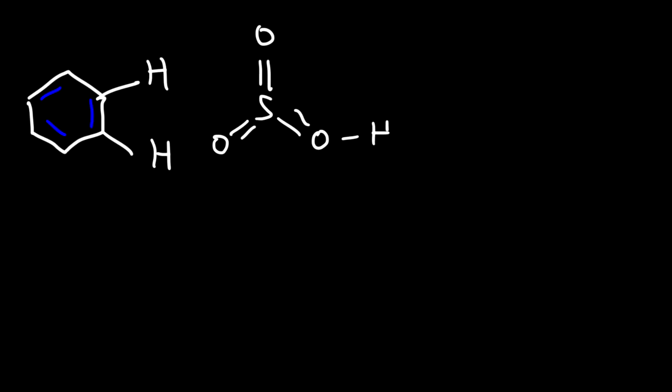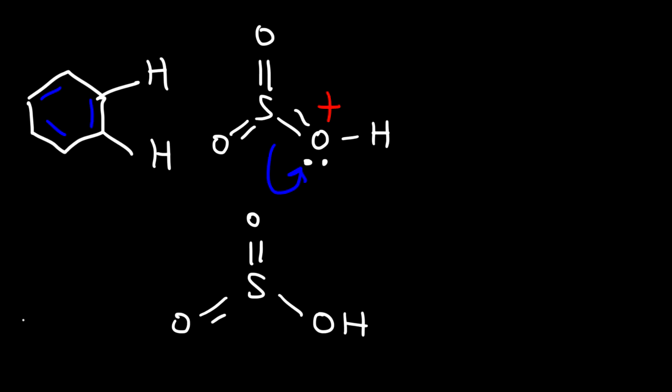So let's start with benzene and react it with the protonated form of SO₃. By the way, if you draw the resonance form of this structure, notice that the sulfur atom has a positive formal charge. Because sulfur is attached to three electronegative oxygen atoms, it is extremely electron deficient — and that's what makes it such a good electrophile in this reaction.